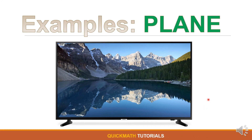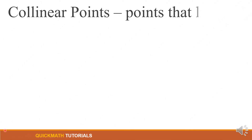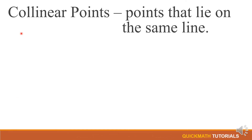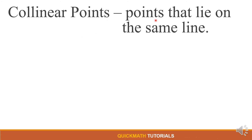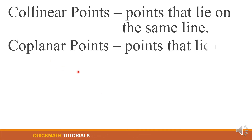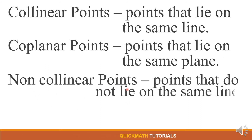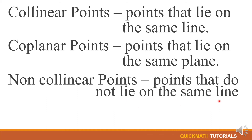Now let's define some terms related to point, line, and plane. First, collinear points are points that lie on the same line. Coplanar points are points that lie on the same plane. Non-collinear points are points that do not lie on the same line. And non-coplanar points are points that do not lie on the same plane.